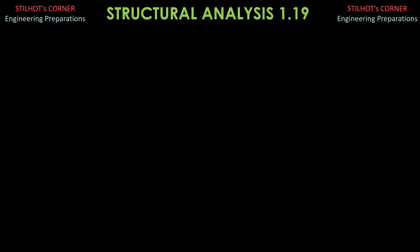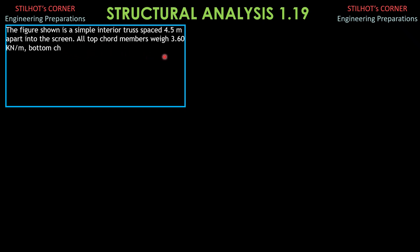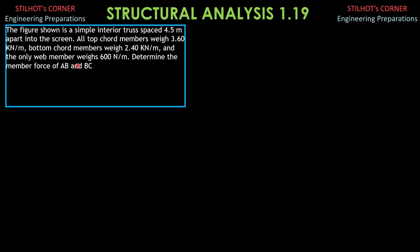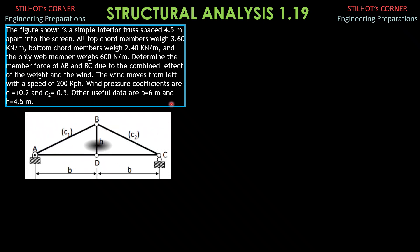Let's still have wind load this time, transmitted on a truss member, then we analyze the force on a truss. The figure shown is a simple interior truss spaced 4.5 meters apart into the screen. All top chord members weigh 3.6 kilonewtons per meter, other bottom chord members weigh 2.4 kilonewtons per meter, and the only web member weighs 600 newtons per meter. Determine the member force of AB and BC due to the combined effect of weight and wind. The wind moves from the left with a speed of 200 kilometers per hour. Wind pressure coefficients are C1 = positive 0.2 and C2 = negative 0.5. Other useful data: B equals 6 meters and H equals 4.5 meters.